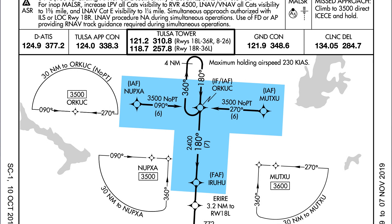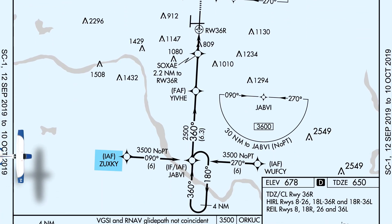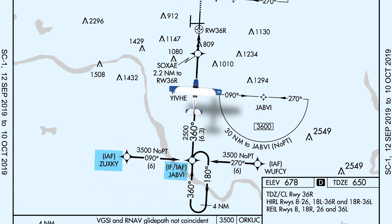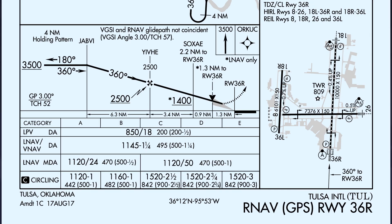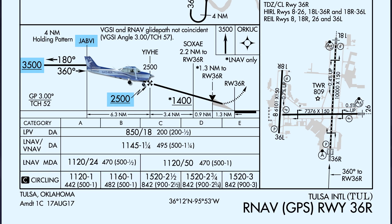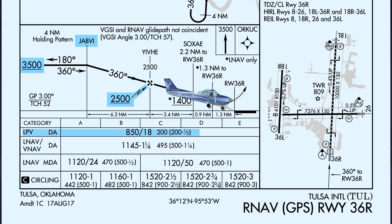Now let's fly an example using the RNAV GPS-36R LPV into Tulsa, Oklahoma. Many GPS approaches follow a basic T design containing two initial approach fixes perpendicular to the final approach course, creating a T shape. The waypoint at the intersection can be used as either an intermediate fix or a third initial approach fix, and will have a 4 nautical mile holding pattern published at it. Approaching Tulsa from over Zuckski flying east towards Jabvi, you will immediately join the final approach course of 360 degrees. No procedure turn will be necessary, as denoted by the term NO-PT along the path. Looking at the profile view, you should remain at 3,500 feet or above until passing Jabvi, then descend down to 2,500 feet until the final approach fix, denoted by the lightning bolt arrow. From here, follow the glide path on your PFD to the LPV decision altitude of 850 feet MSL. This is where you make your decision to continue the approach to land or perform a missed approach.